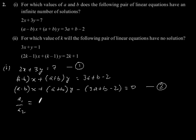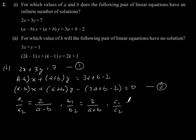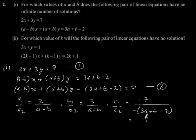Now, A1 by A2 will be 2 by (A minus B), and B1 by B2 is equal to 3 by (A plus B), and C1 by C2 is equal to minus 7 by minus (3A plus B minus 2), which becomes 7 by (3A plus B minus 2).